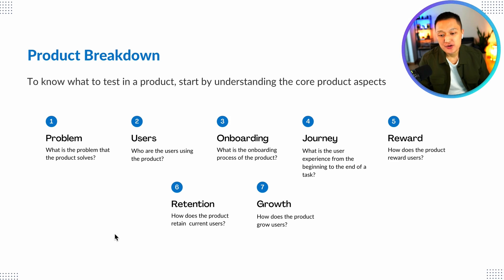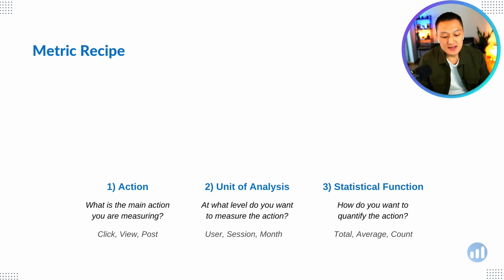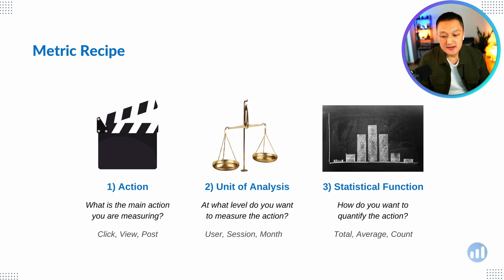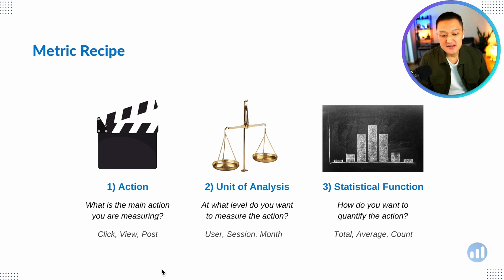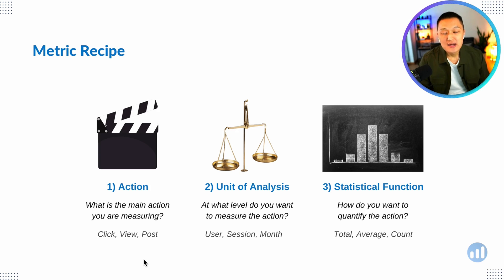Once you understand product breakdown, there are three essential elements you need to know when defining a metric: action, unit of analysis, and statistical function. Action is what main action you're trying to measure — clicks, views, posts. Often when I ask a candidate what KPI they'd use to measure an email campaign, they might say 'clicks,' but that alone isn't enough.